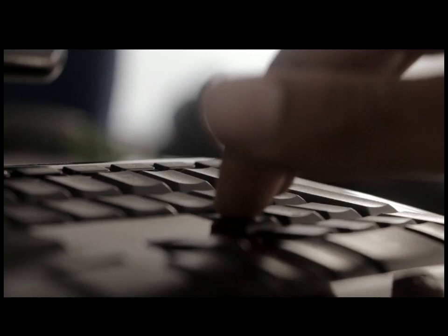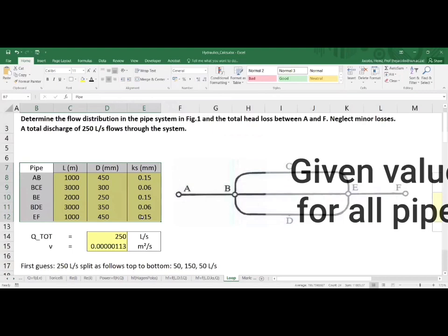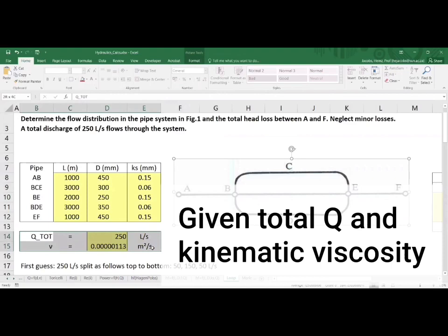We fire away with Excel. We have the given input values for length, diameter, and the pipe roughness Ks in millimeters, and we have the given flow rate, total flow rate, and the kinematic viscosity.